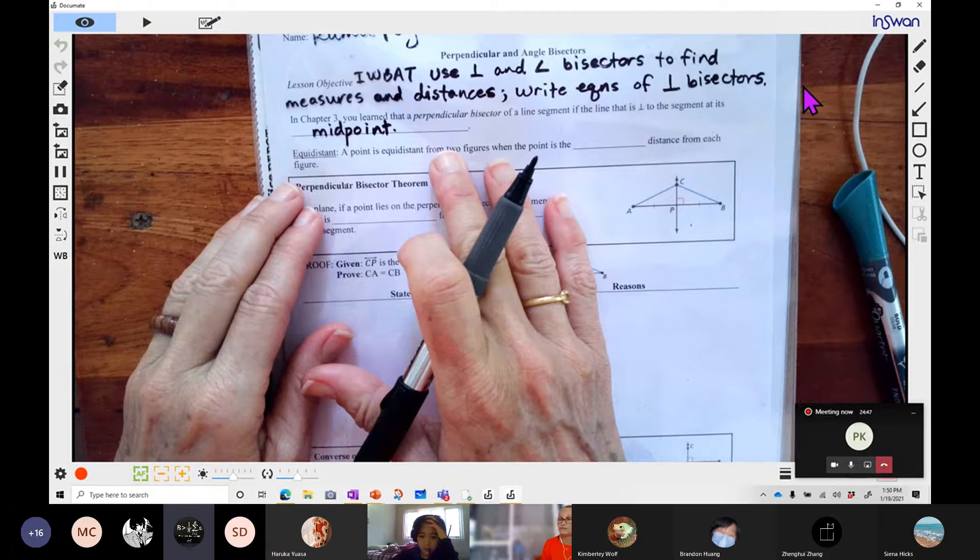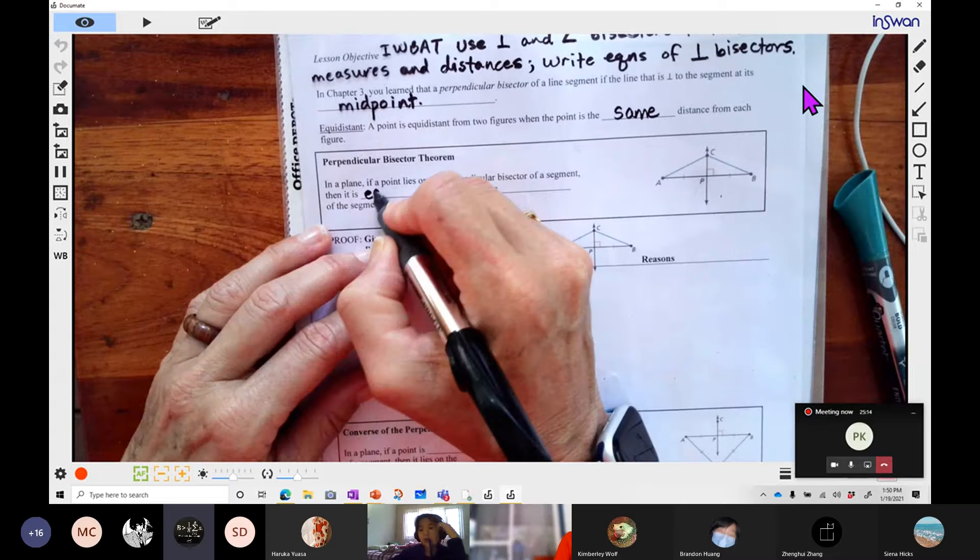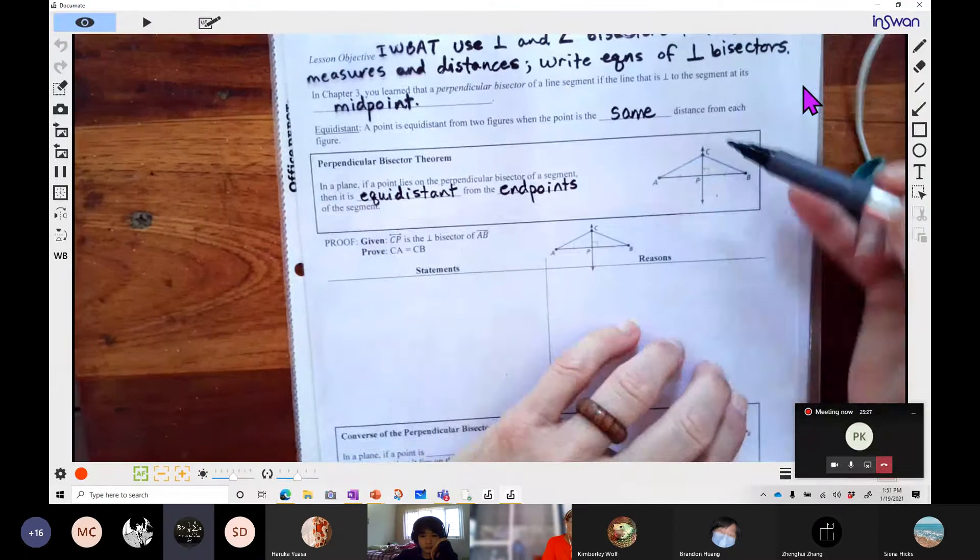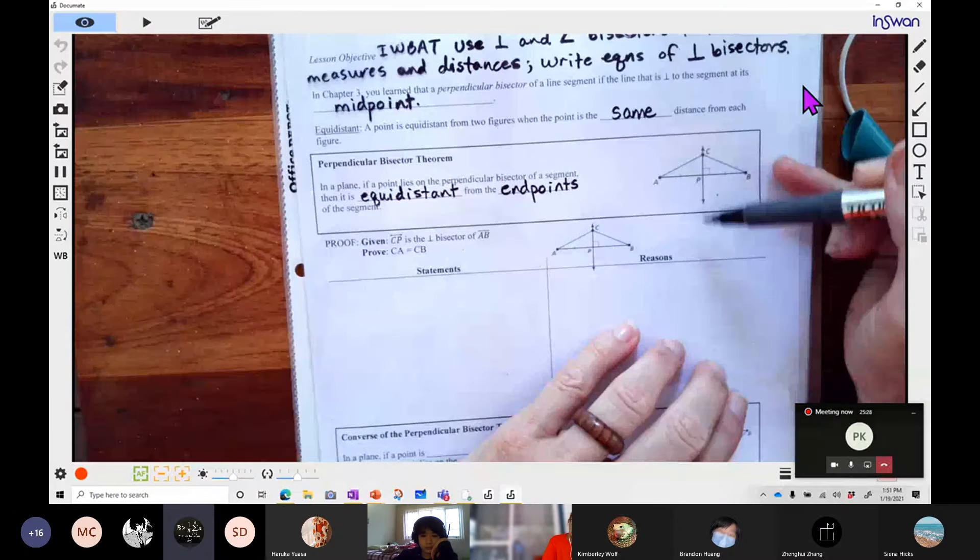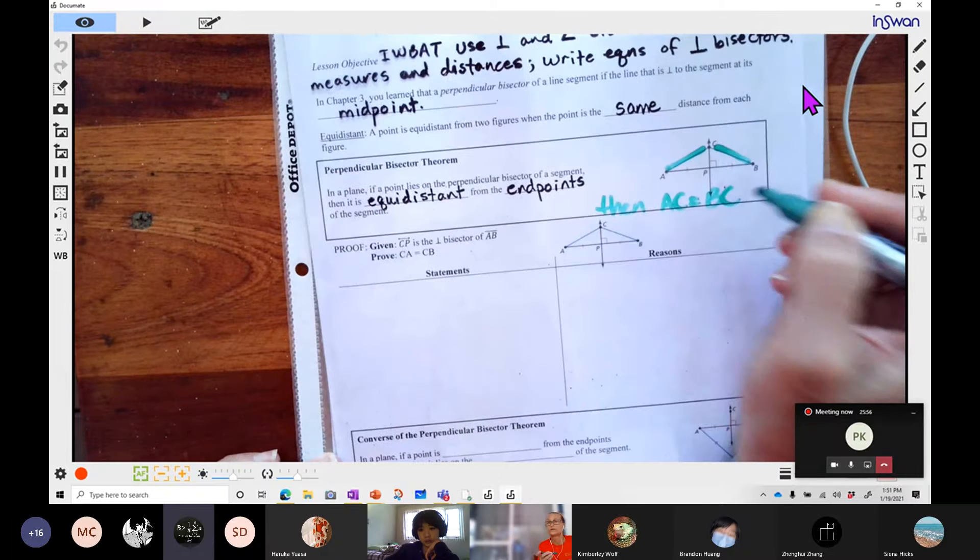We have this theorem we went over on Friday, I'll review it quickly. The perpendicular bisector theorem says in a plane if a point lies on the perpendicular bisector of a segment, then it is equidistant from the endpoints. So what this means is CP is a perpendicular bisector, and if C is some point on this line, any point, and this is a perpendicular bisector, then what it's saying is that AC is equal to BC.